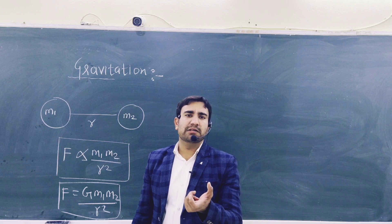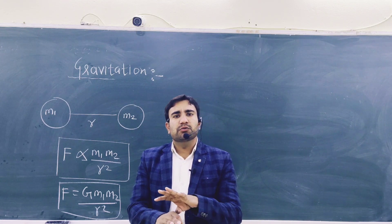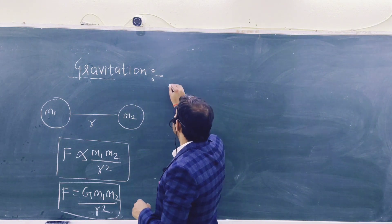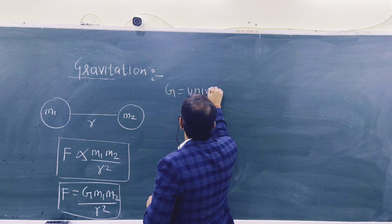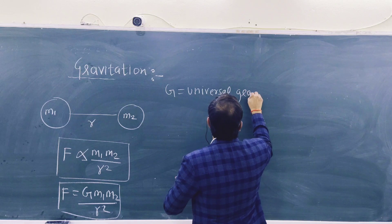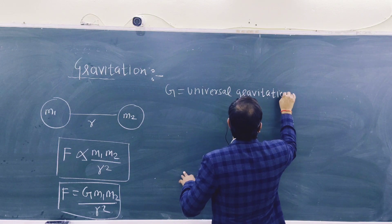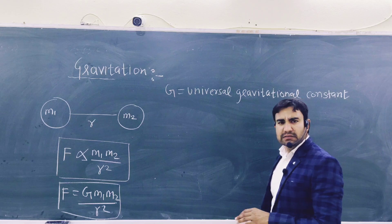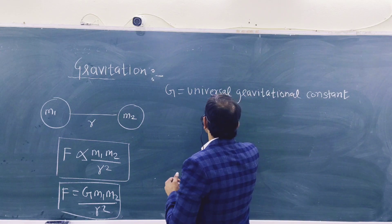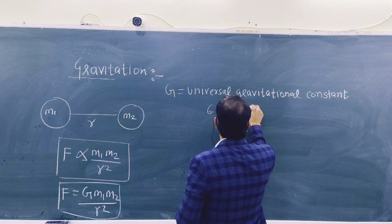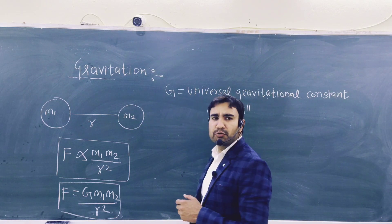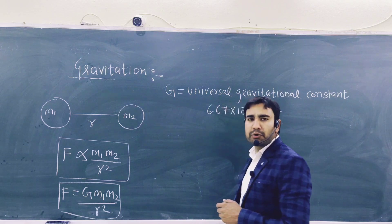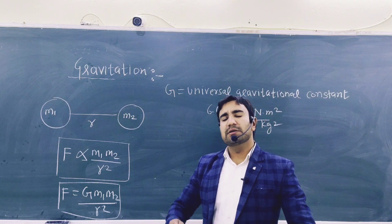Here, G is nothing but the universal gravitational constant. Capital G is called the universal gravitational constant. Its value is constant throughout the system. The unit of G is Newton meter squared per kg squared.